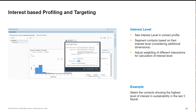The interest level is calculated from all the data in real time — it's a kind of real-time score. This interest level is available in the contact profile, where you can also slice and dice it. It's also available in segmentation. You can ensure you only use data from your specific marketing area, so that in a multi-brand company, you only work with the data you're allowed to use. For example, you could select contacts showing the highest interest in sustainability over the last three months and mix it with other criteria like revenue.